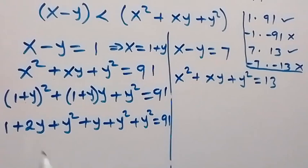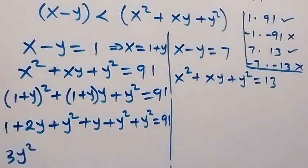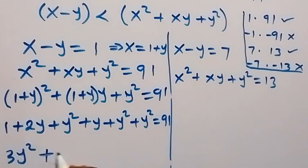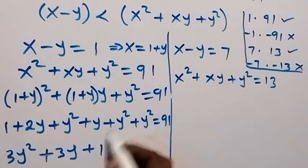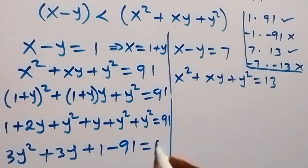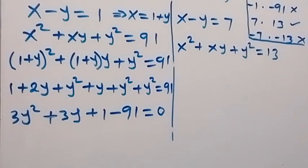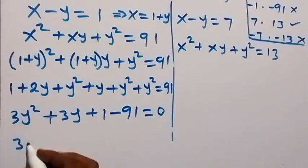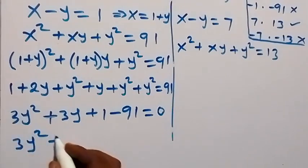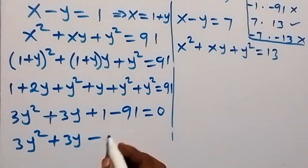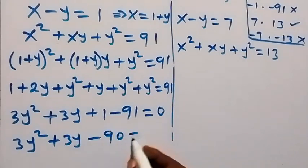When we add the like terms, we have y squared plus y squared plus y squared — that is 3y squared. Then 2y plus y gives plus 3y. Then we have plus 1, and taking 91 to the left gives minus 91 equals 0. So this gives us 3y squared plus 3y minus 99 equals 0.